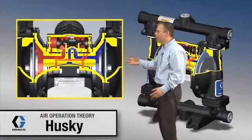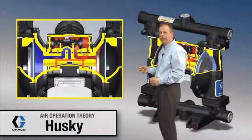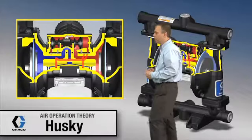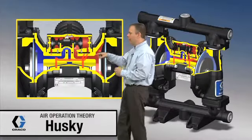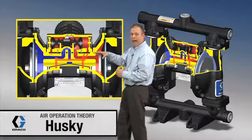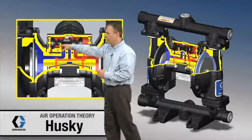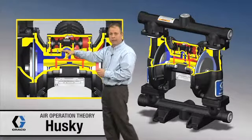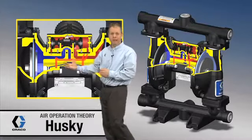We're going to go ahead and stop this animation and take a closer look at the paths that exist on this air valve. Right now the red indicates high pressure air, and the blue over on the other side indicates low pressure or venting air.